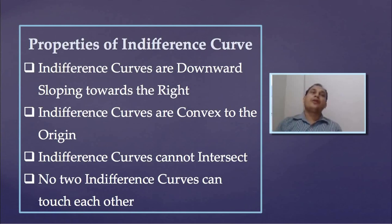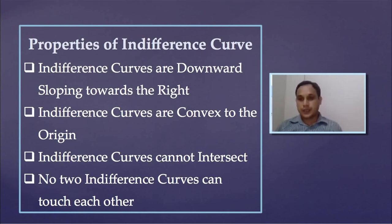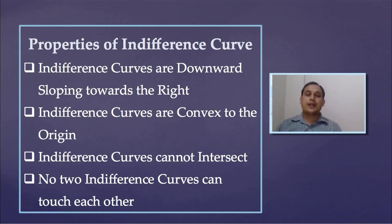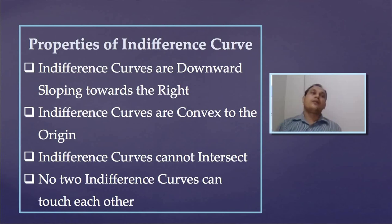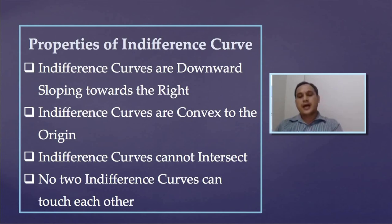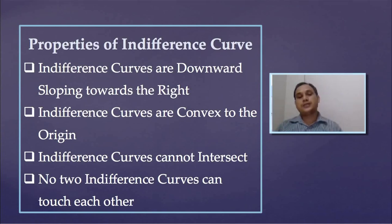A higher indifference curve must give a higher level of satisfaction compared to a lower one. If indifference curves could intersect, then a higher indifference curve might not give a higher level of satisfaction than the lower one, which is not possible. That is why indifference curves cannot intersect each other.